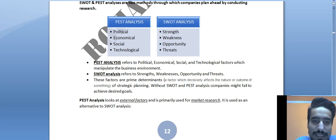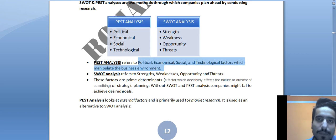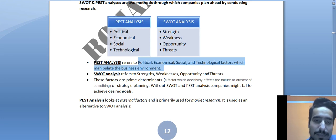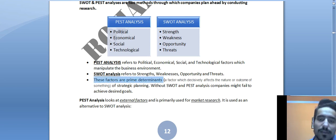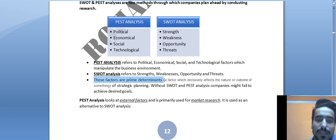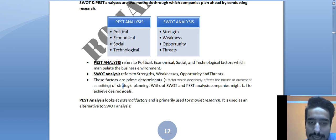PEST analysis refers to Political, Economical, Social, and Technological factors which influence or change the business environment. SWOT analysis refers to Strength, Weakness, Opportunity, and Threats. These factors are prime determinants of strategic planning — meaning they decisively affect the nature or outcome of something.